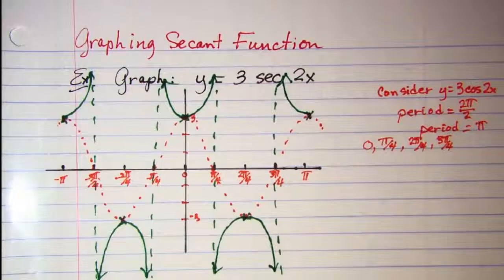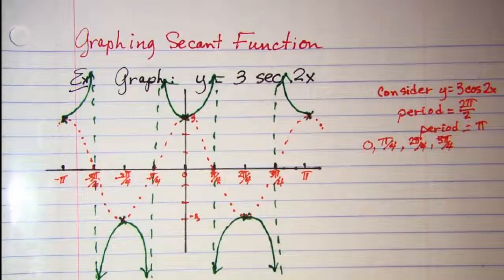So my green curve here is my y equals 3 secant 2x.